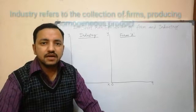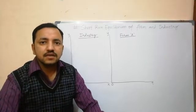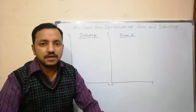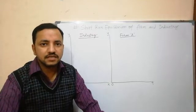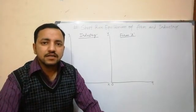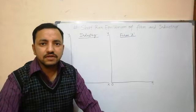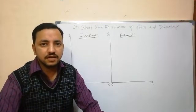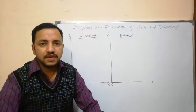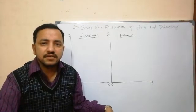An industry is a collection of firms producing homogeneous products under perfect competition. The job of the industry is to decide the equilibrium price which should be accepted by all the firms in the market. The industry gets equilibrium under two conditions: when market demand equals market supply, and when all the firms are in equilibrium. When these two conditions are fulfilled, the equilibrium price is determined by the industry and all the firms are only price takers.